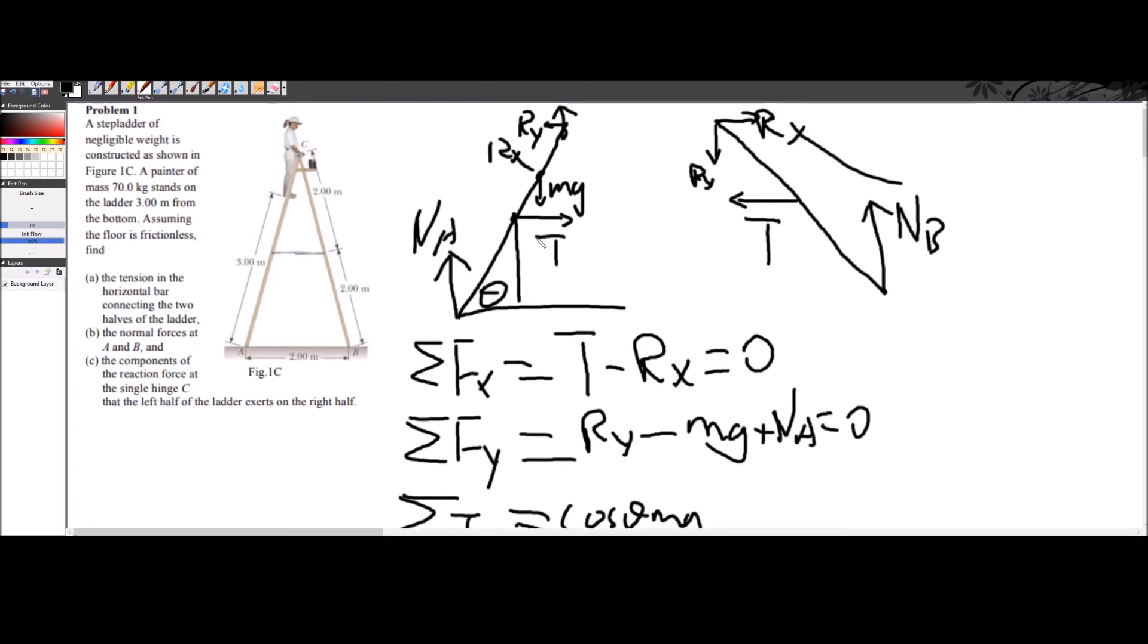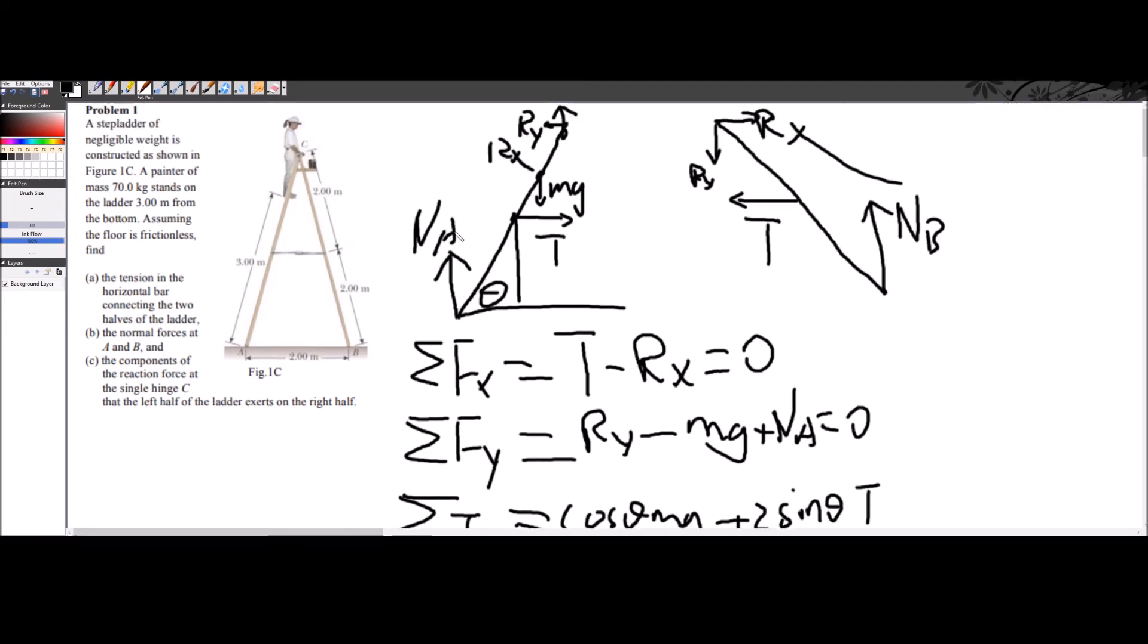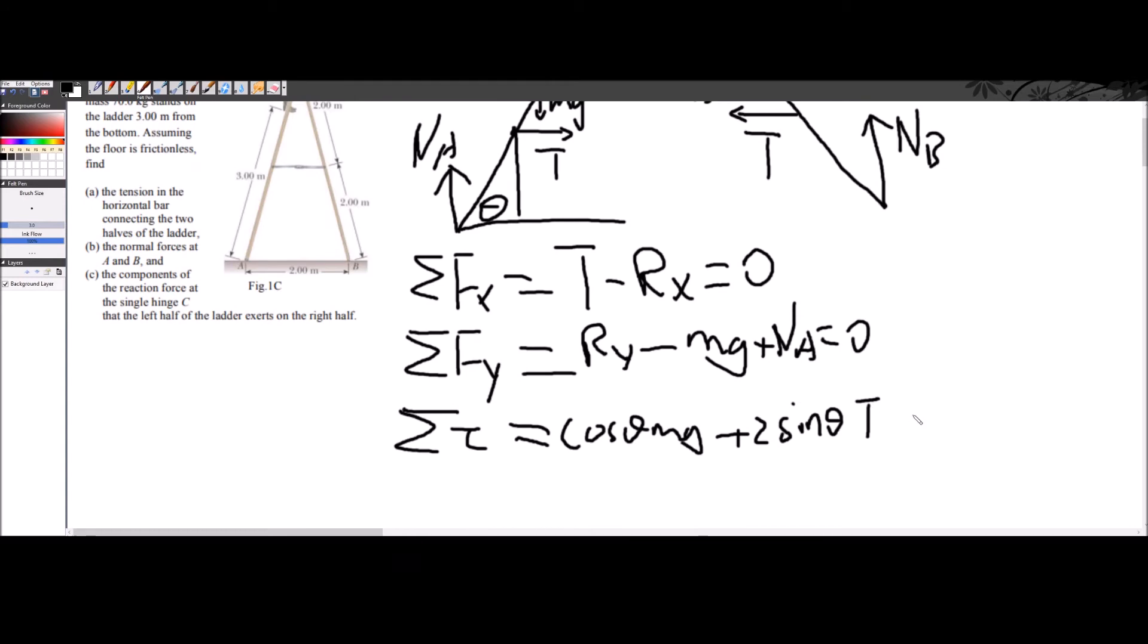And for tension as well, it will be sine to be perpendicular to this, and this length is 2, so it'll just be plus 2 sine theta tension. And now for the normal force, the perpendicular is going to be cosine again, but this is in the opposite way, so it will be subtracting, and the length is going to be 4. So it's going to be minus 4 cosine theta normal A.